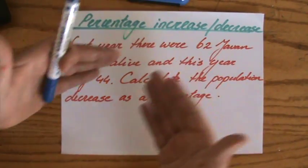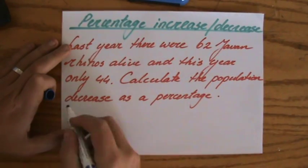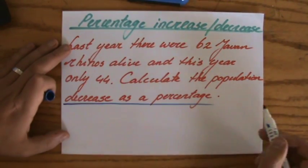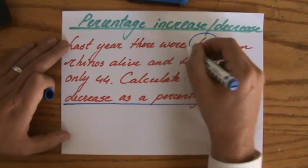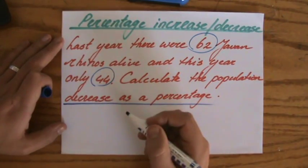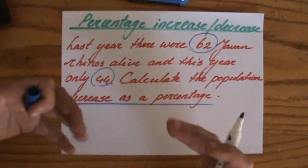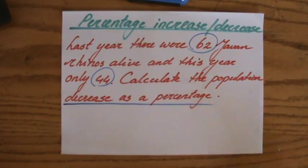As you know, it's going down, it's decreasing. We have to find the percentage decrease. It was 62, now it's 44. And as I've explained in my previous videos, you calculate the percentage increase or decrease...